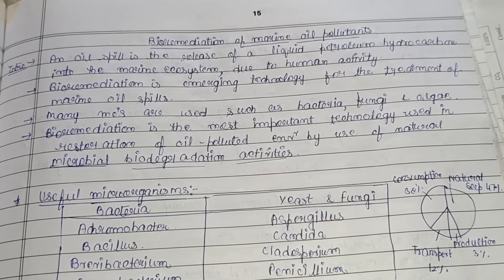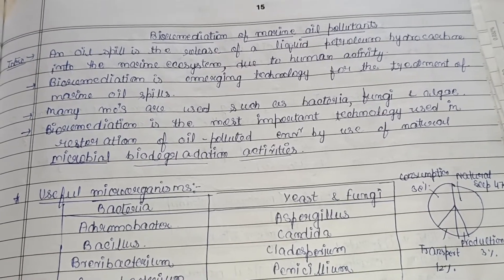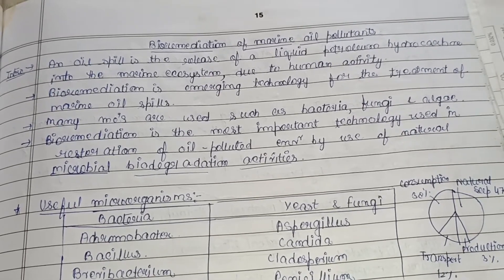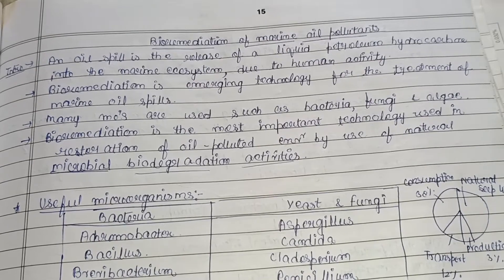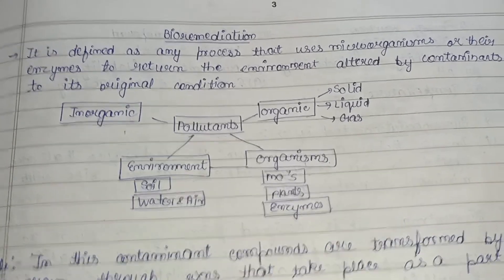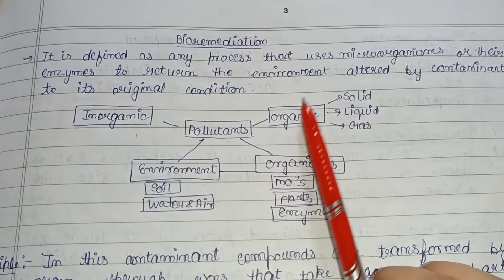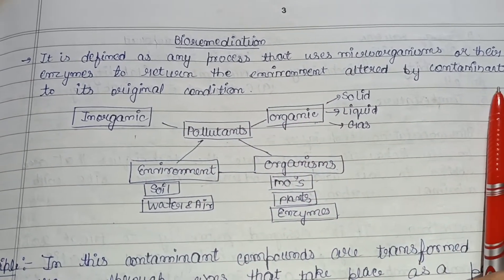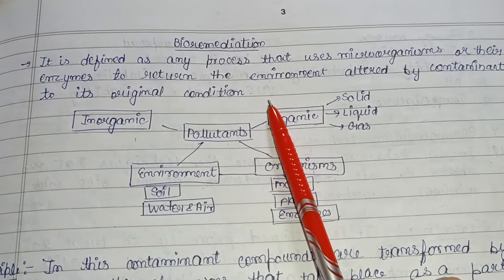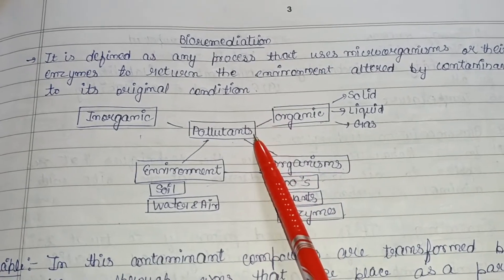Hello everyone, welcome back to my channel. Continuing with the series on biotechnology, today we are going to study about the bioremediation of marine oil pollutants. First, we need to know what bioremediation is. It is defined as any process that uses microorganisms or their enzymes to return the environment altered by contaminants to its original condition — essentially improving the environment from a polluted state to a non-polluted one.